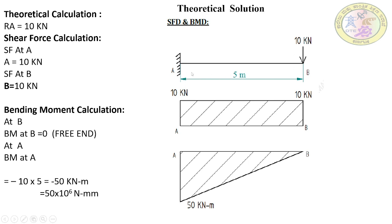There are no intermediate points from B to A, so next we calculate the bending moment at A. We have only one point load acting at B, which is at a distance of 5 meter from point A. So 10 kilo newton is at a distance of 5 meter. Bending moment equals load into distance. We are taking this load direction as negative, so minus 10 into 5 gives minus 50 kilo newton meter.